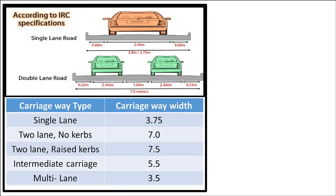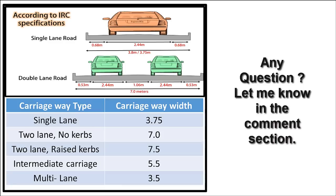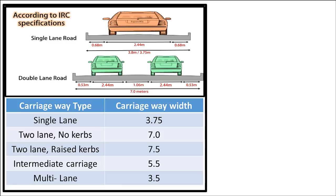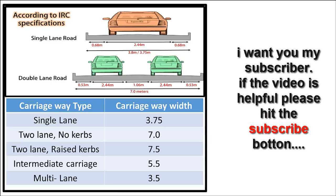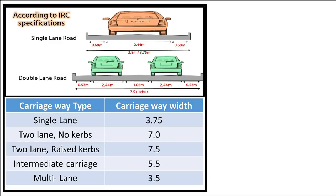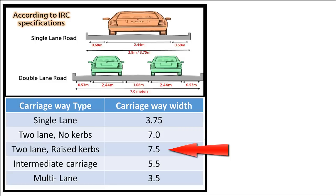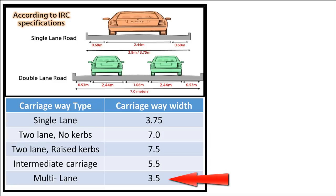The carriageway breadths recommended by IRC are given in the following table for different types of roads. According to the table, the carriageway width should be 3.75 meters for a single lane road. For a double lane road without curves on the side, it should be 7 meters. For two lanes with rising curves, the carriageway width should be 7.5 meters. For an intermediate carriageway, 5.5 meters is required. For multi-lanes, the carriageway should be 3.5 meters per lane.